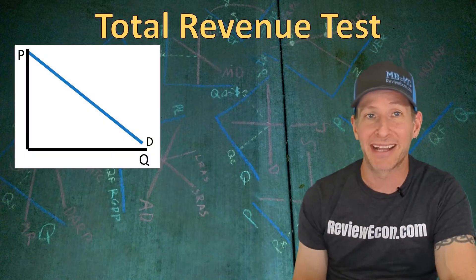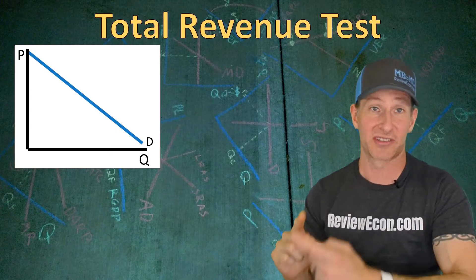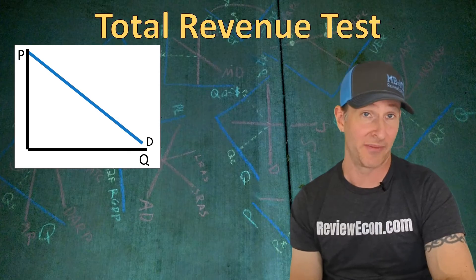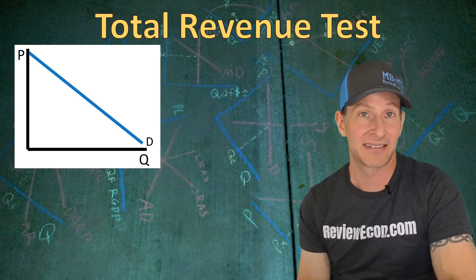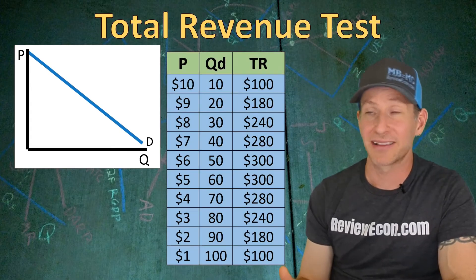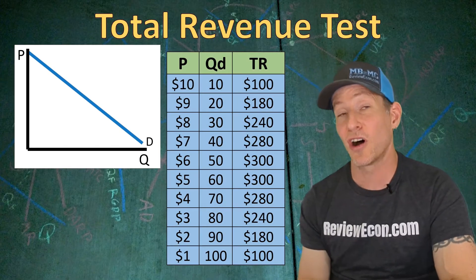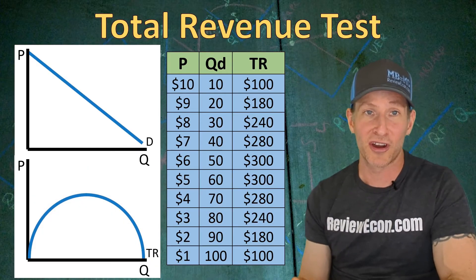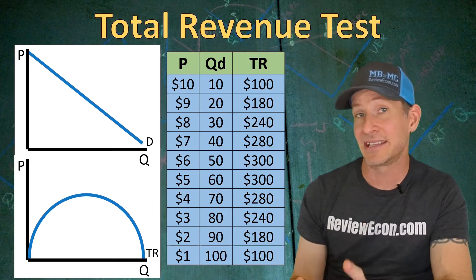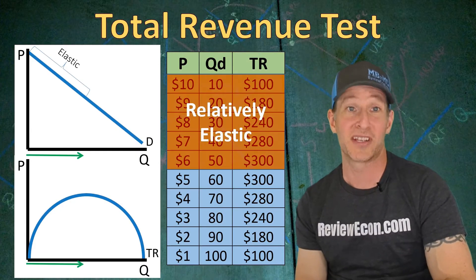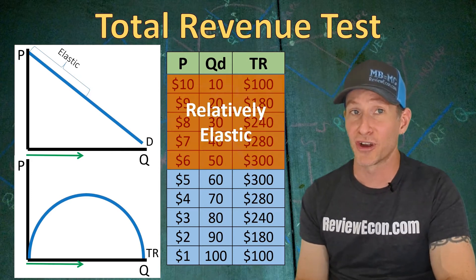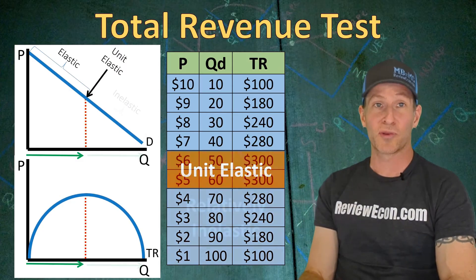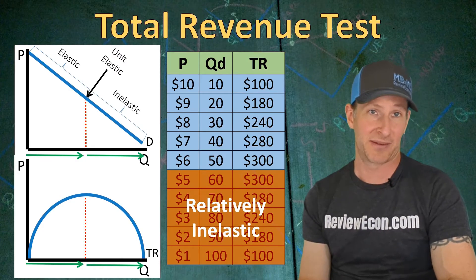The truth is a straight-line demand curve is actually going to have three ranges. At some prices we will have an elastic demand curve, a unit elastic point in the middle, and then an inelastic range on the lower portion. We can see this mathematically through a table showing price, quantity, and total revenue. When you graph the total revenue curve alongside the demand curve, you can see that total revenue increases while the demand curve is elastic, hits a maximum at the unit elastic point, then falls as the demand curve becomes inelastic.